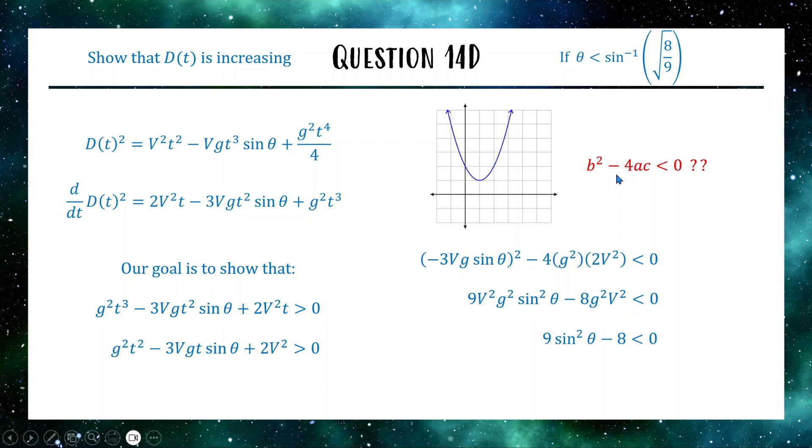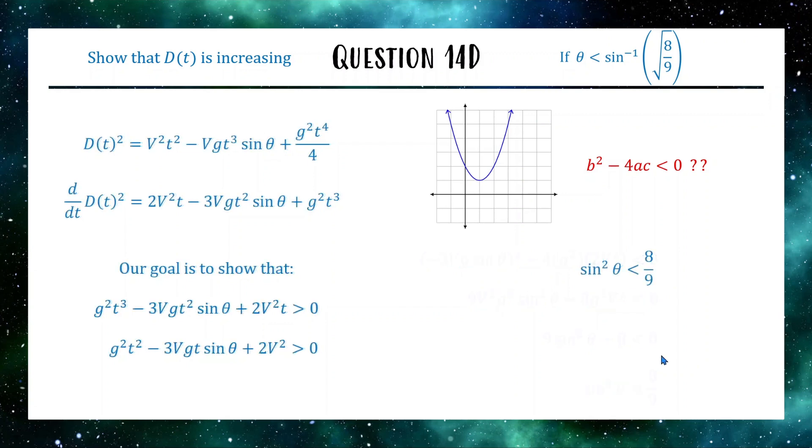Now looking at the target, it looks like we're on the right track here, because we can add that 8 across, divide by 9, and then we can take the square root of both sides, and say that sine theta is going to be less than the square root of 8 over 9. We don't need to worry about plus minus, because we are looking at theta being an acute angle, because it's a projectile. Now we just take sine inverse, and then we've pretty much done it, because there we have theta is less than sine inverse of 8 over 9, which was the target.